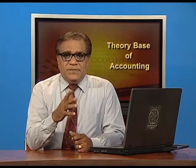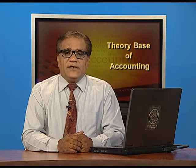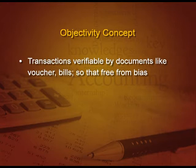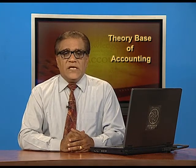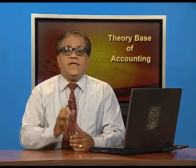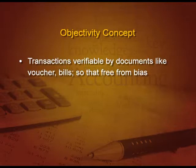The next concept is the objectivity concept. It states that all transactions must be verifiable by documents like vouchers, bills, etc. For example, if I purchase stationery worth 100 rupees, then I must get a bill for that and then record it in the accounts.